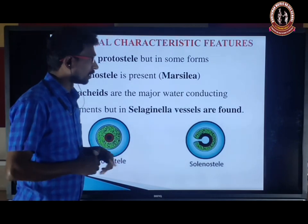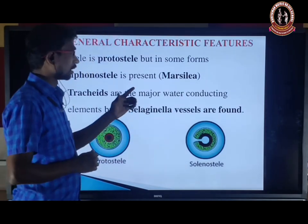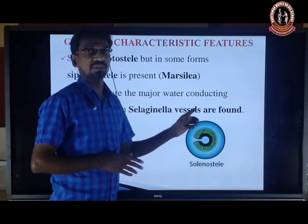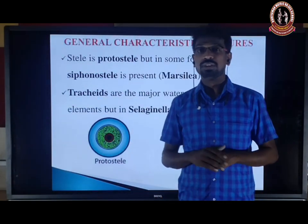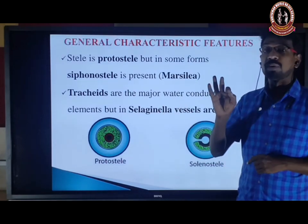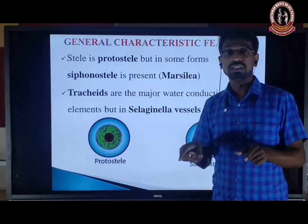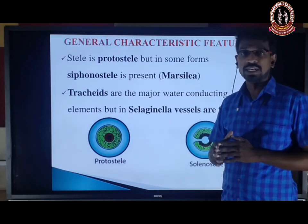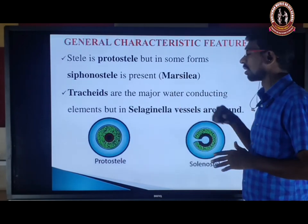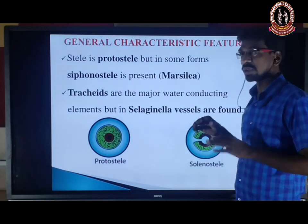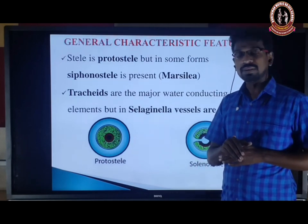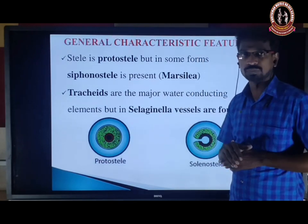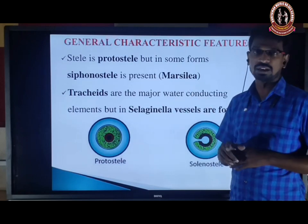The tracheid is the major water-conducting element in all Pteridophytes, except in Selaginella where vessels are found — this is a very important exam-oriented point. Tracheids are very common water-conducting elements in all pteridophytic plants except Selaginella. The presence of vessels is a characteristic feature of angiosperms, but this character is also present in the pteridophyte Selaginella.